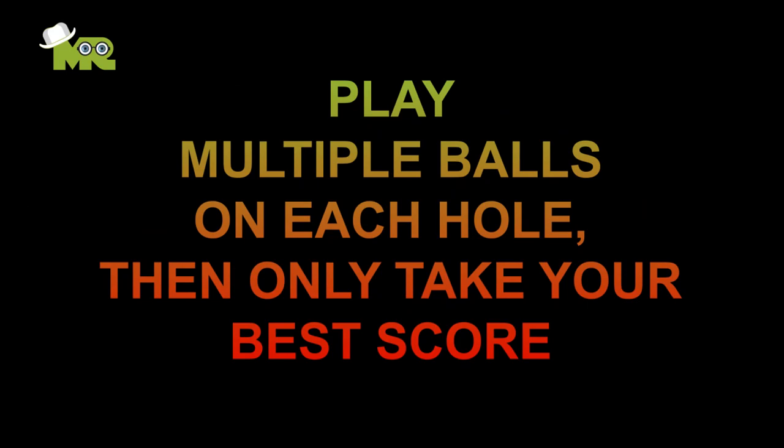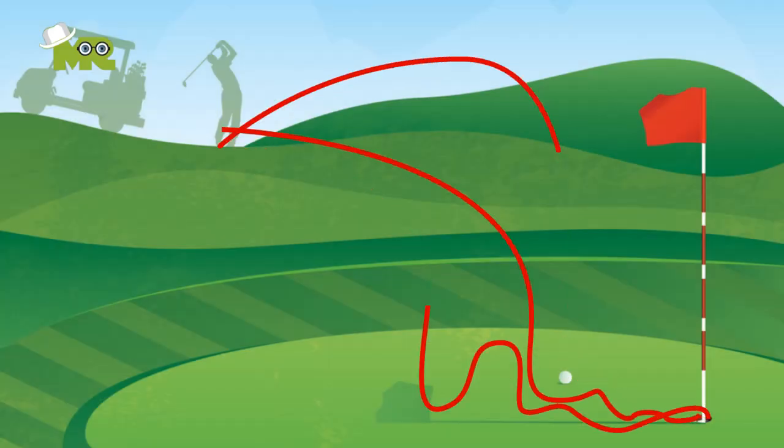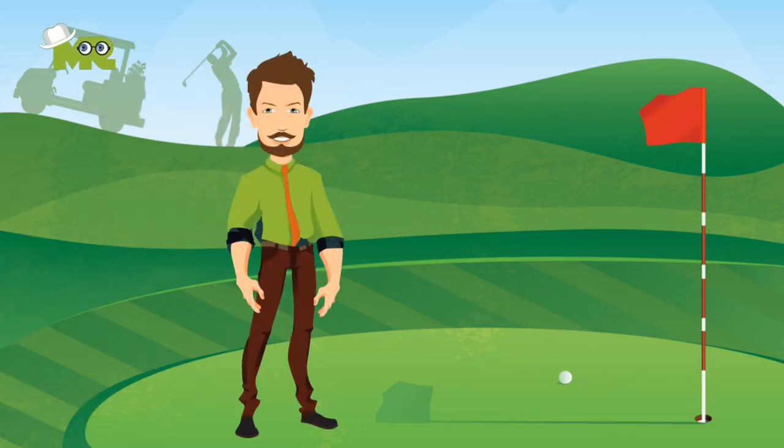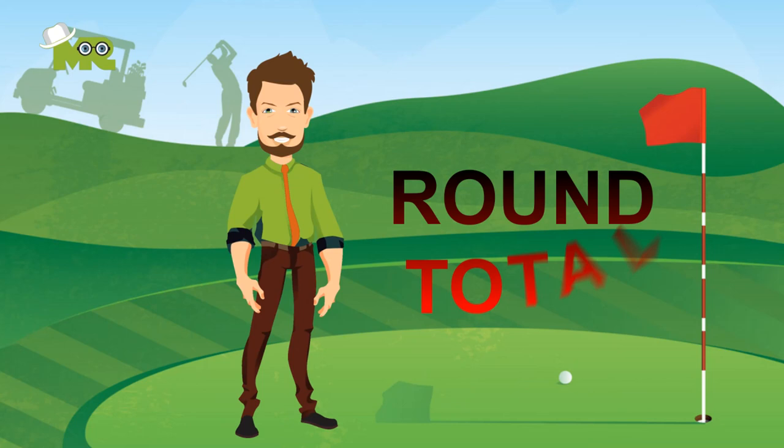Play multiple balls on each hole, then only take your best shot. There are people out there playing golf who play three separate balls and score each of them individually. Once the round ends, they add up their best scores for each hole and count that as their round total.